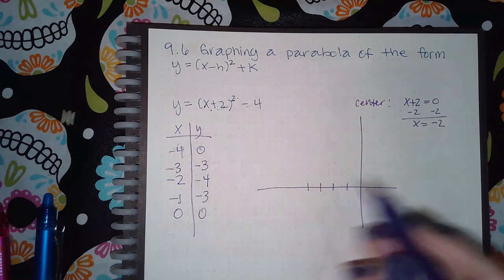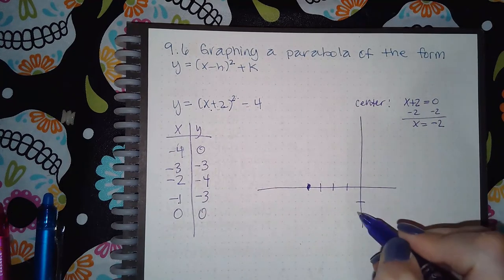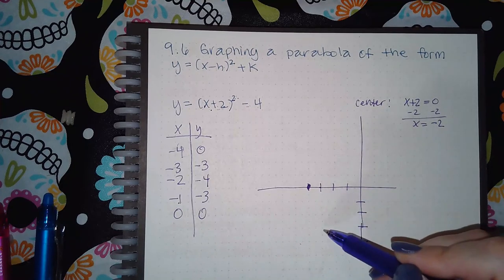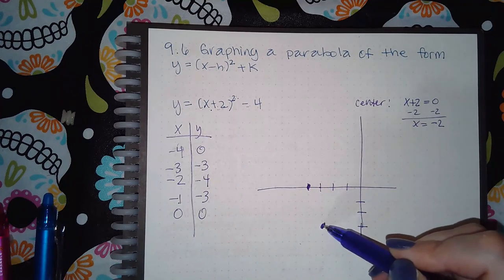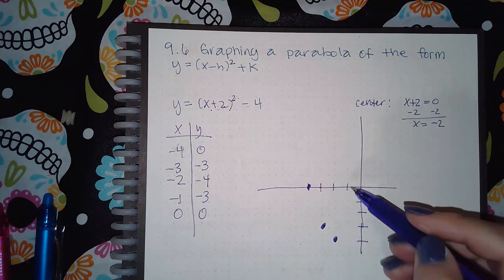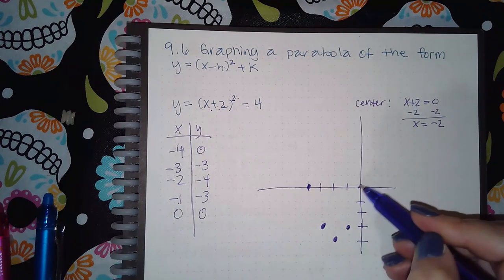So we get negative 4 and 0, negative 3 and negative 3, negative 2 and negative 4, negative 1 and negative 3, and then 0 and 0.